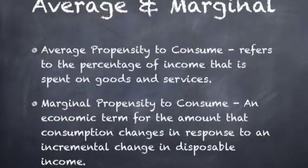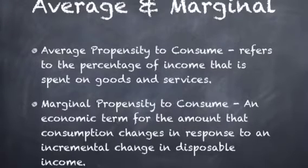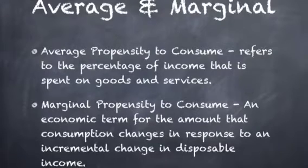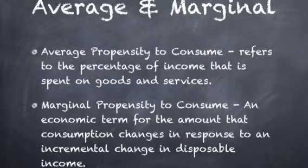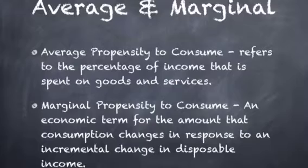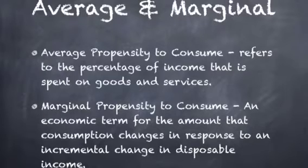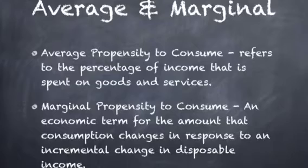So there are two types of propensity to consume: there's average propensity to consume and there is marginal propensity to consume. Average propensity basically refers to the percentage of income that's spent on goods or services. So if you've got £15,000 as a salary per year, then you're going to spend say £5,000 on food or something like that — it's how much of your income you're spending over the whole year, the average of your whole income.